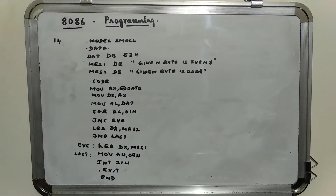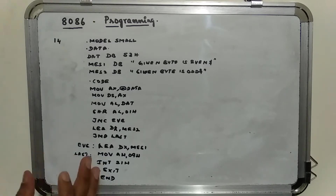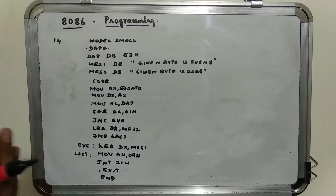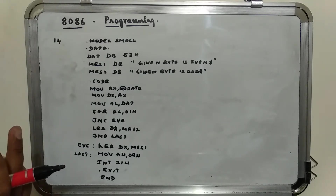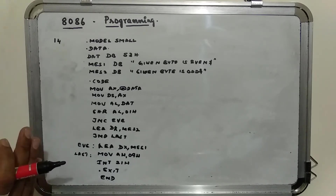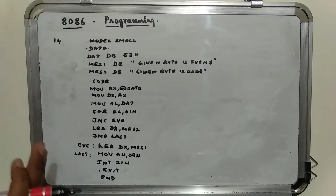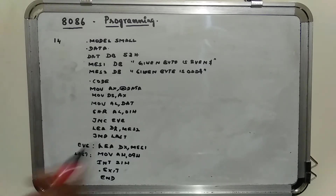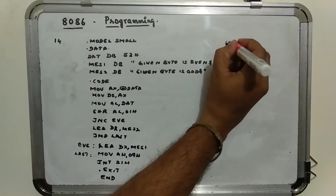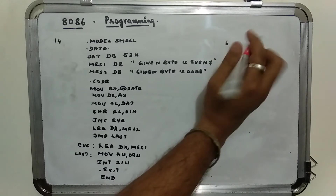Now in this program we are checking whether the given byte is even or odd. As we did in the previous program, we checked whether the given byte is positive or negative — that depended solely on the MSB bit status: if MSB is 1, it is negative; if MSB is 0, it is positive. Here we are checking even or odd. Take an even number, say 64h.